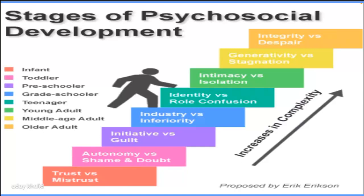In the Freudian psychosexual stages of development, there are different body zones: the oral stage, then the anal stage, then the phallic stage, then latency, and then the genital stage — as discussed in the lecture on the psychoanalytic theory.